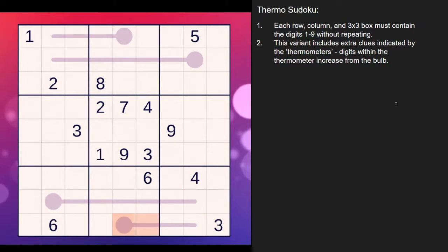But whatever digit is on the bulb has to be lower than the digit at the tip and the ones in the middle. So it could be one, two, three, four, but it doesn't have to be. It could be one, five, seven, nine. It could be three, five, seven, nine. But the lowest number is going to always be at the bulb and the largest number is always going to be at the tip.